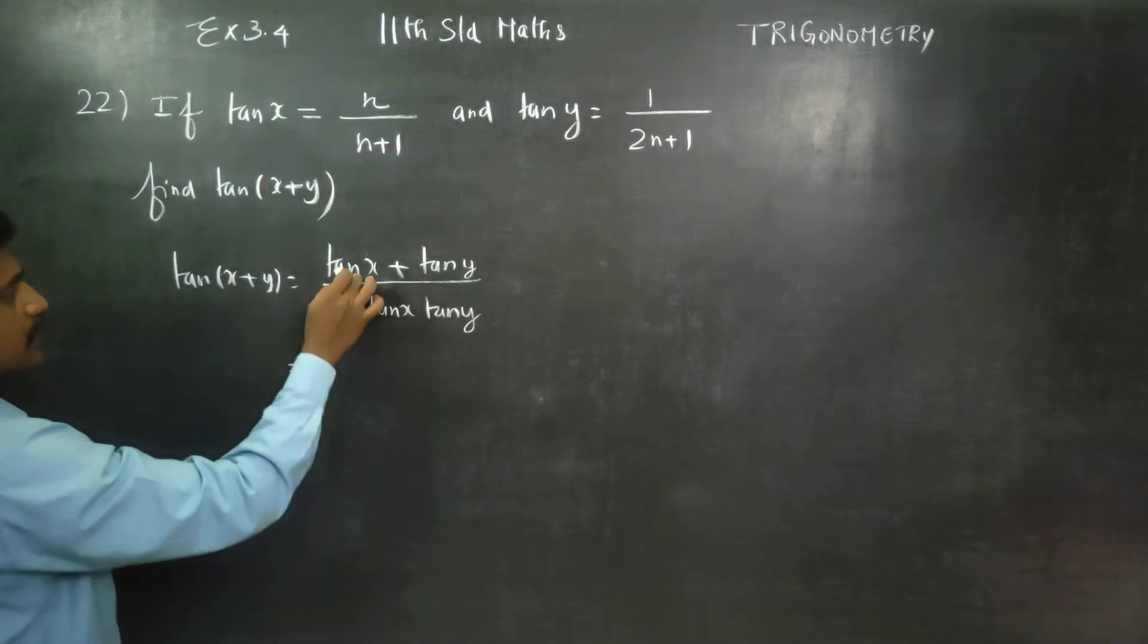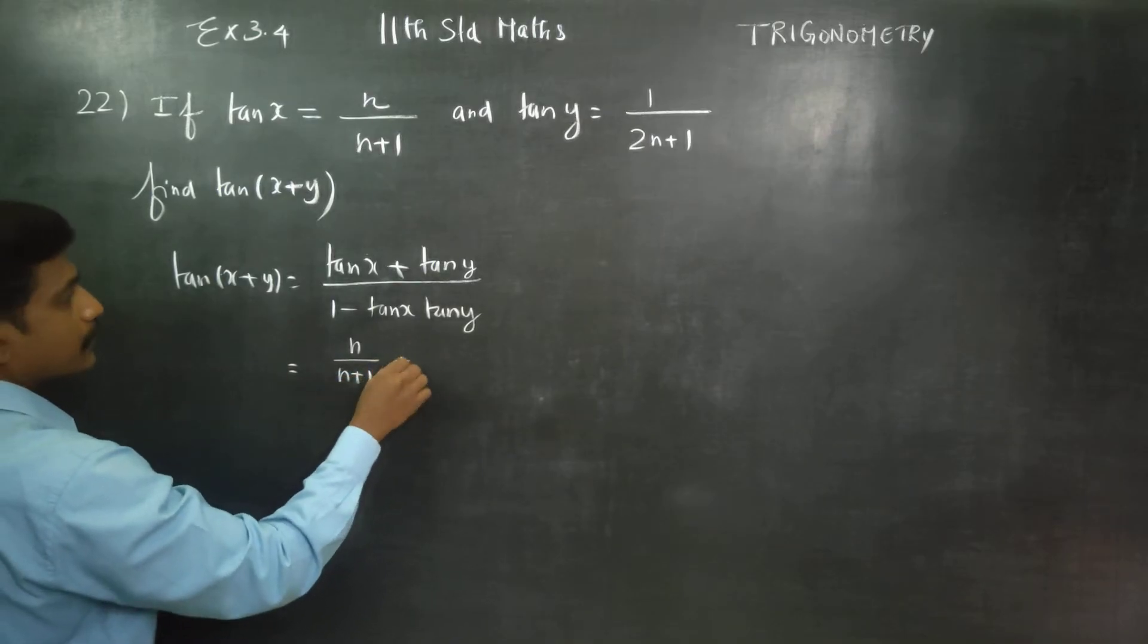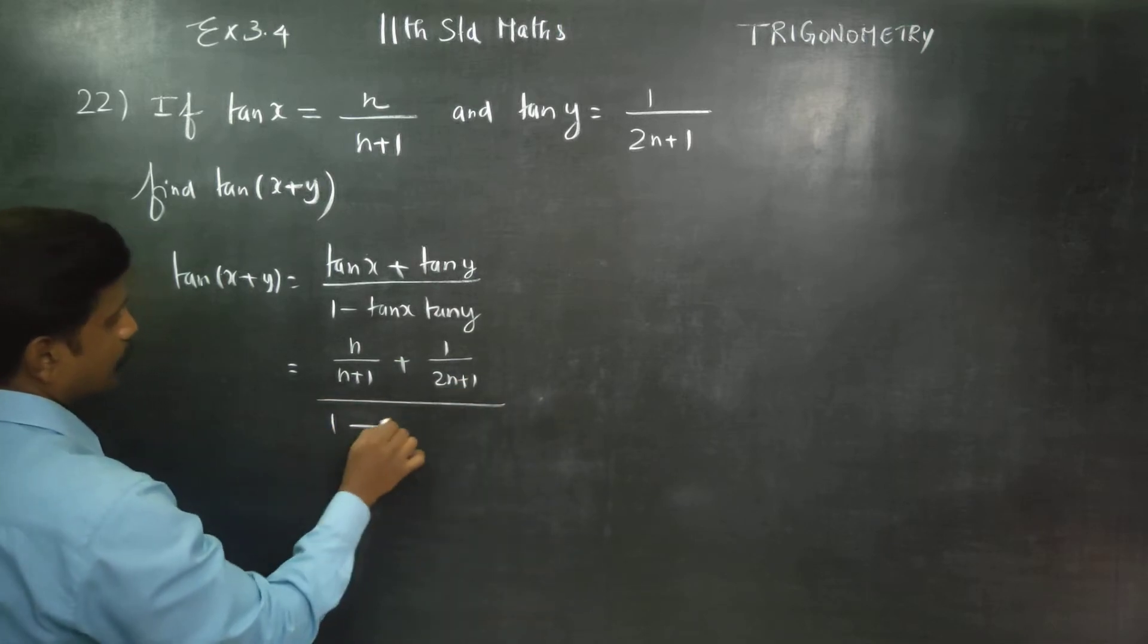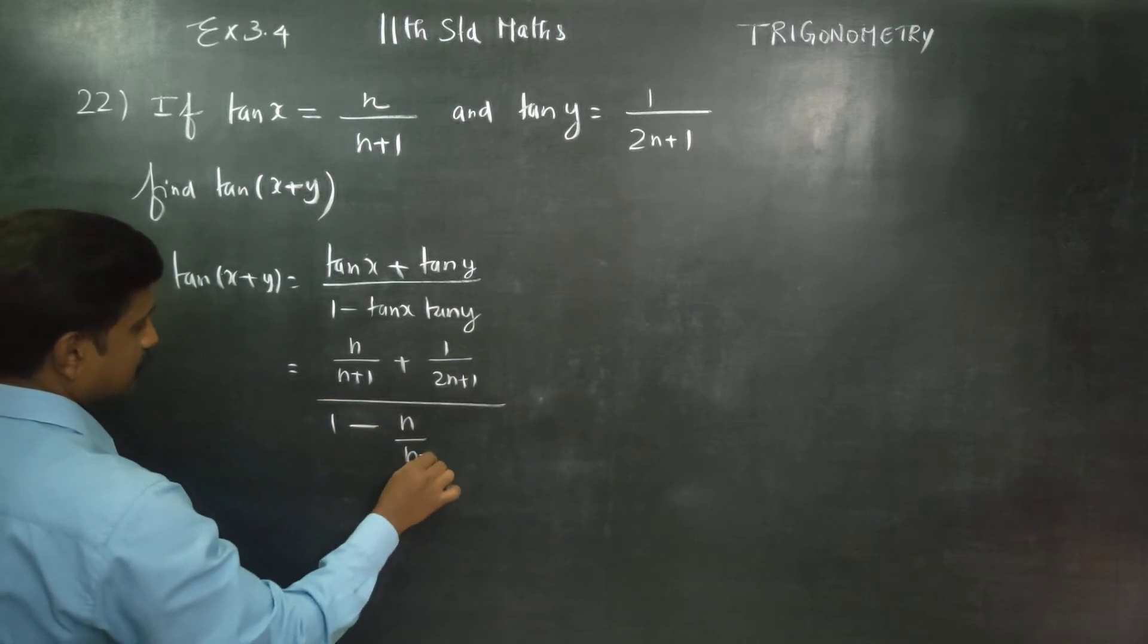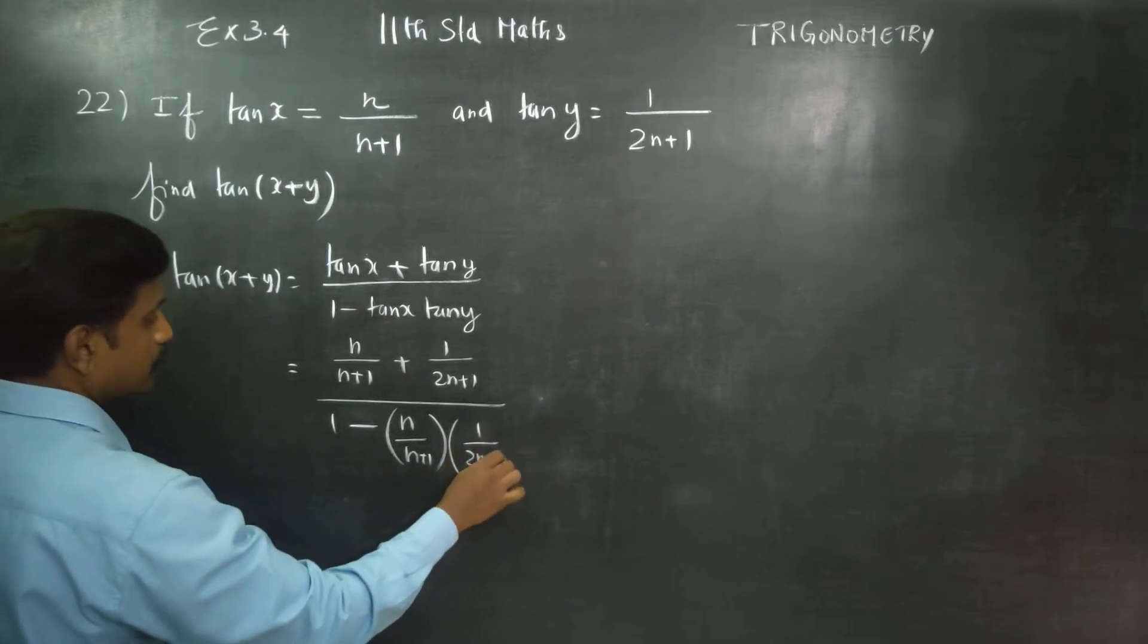You can substitute tan x would be value n/(n+1) plus 1/(2n+1) divided by 1 minus n/(n+1) into 1/(2n+1).